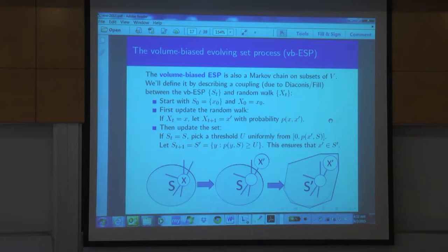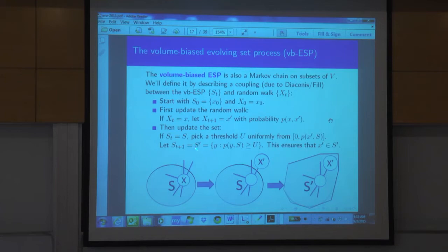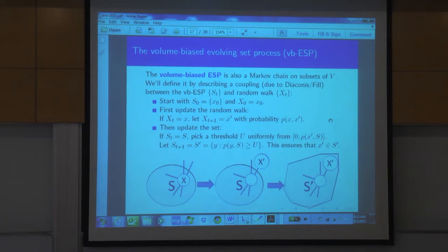If S_t is S, we want to condition S_{t+1} to contain the moving particle x prime. The threshold u, instead of being uniform in [0,1], is uniform in [0, p(x prime, S)]. This ensures x prime is not lost and is very easy to implement. Then S_{t+1} is the new set with this threshold. This ensures the set keeps containing the moving particle. The beautiful thing — which is not obvious — is that if you follow this rule exactly, the sequence of sets S_t you get is exactly the Doob transform of the original process: it's exactly S_t conditioned to be absorbed in the whole space.